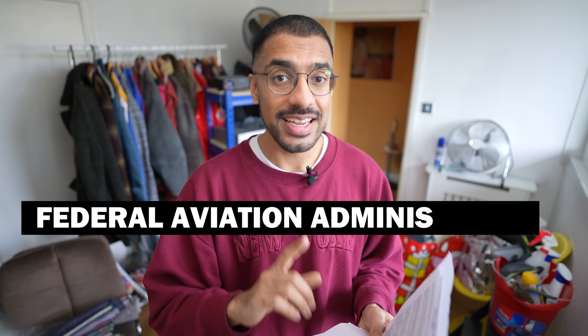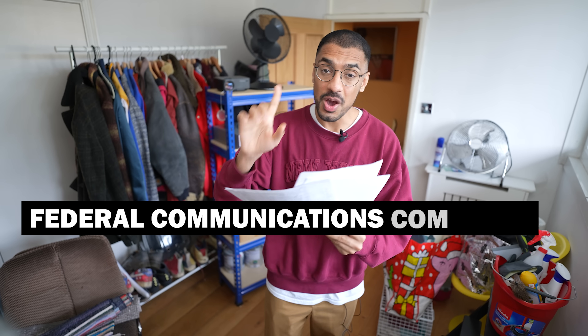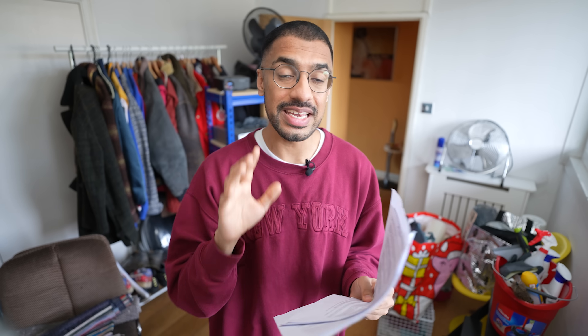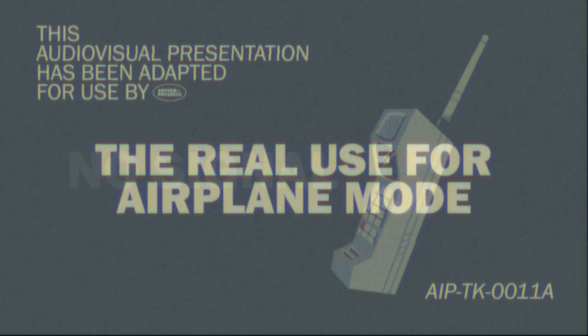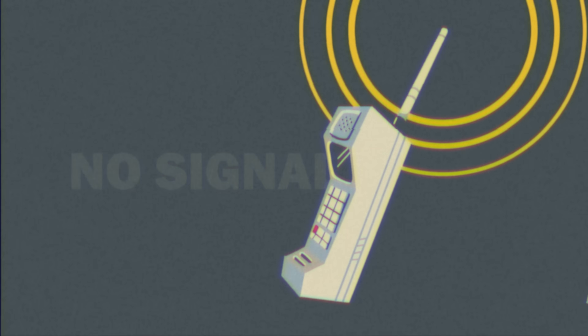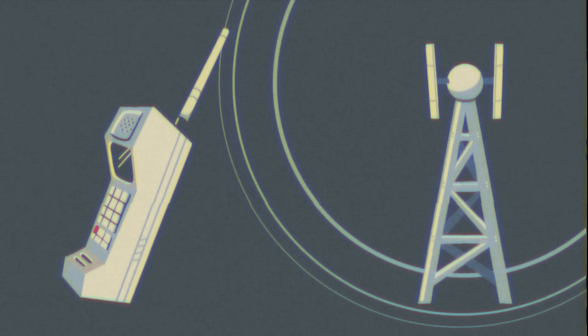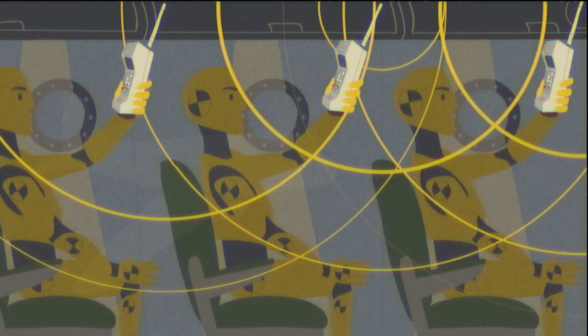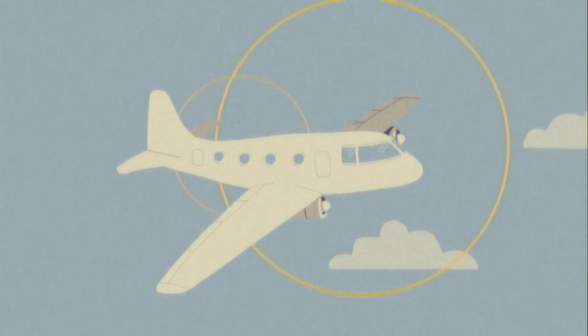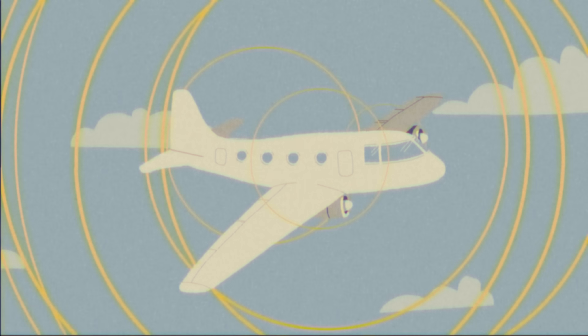The FAA isn't the only federal organization interested in keeping the rule. The FCC also has an interest in airplane mode — and they don't care about airplane safety at all. It turns out that even if we don't need airplane mode to protect people on the plane, we might need it to protect people on the ground. When a mobile phone has no signal, it emits radiation until it reaches a cell tower. If you're really far from a cell tower — like on a plane — the phone emits increasing levels of radiation. Now imagine a plane full of 600 phones searching for a signal, all emitting maximum amounts of radiation.